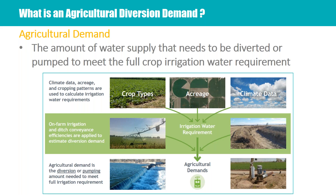I want to take a minute to talk about what this demand is not. It is certainly not the maximum water rights — this is not trying to meet every single absolute senior, junior, or conditional water right in the state of Colorado. This is an acreage-based number, relying on the most recent 2015 acreage coverages. It is also not based on historical diversions, which is one of the things used in the previous SWSI effort. Historical diversions have shortages already built into them — physical shortages, legal shortages — as well as historical irrigation practices and following crop types.